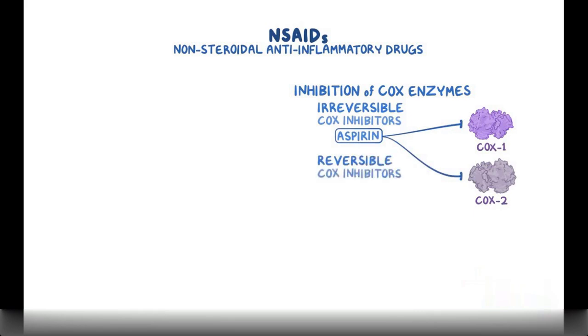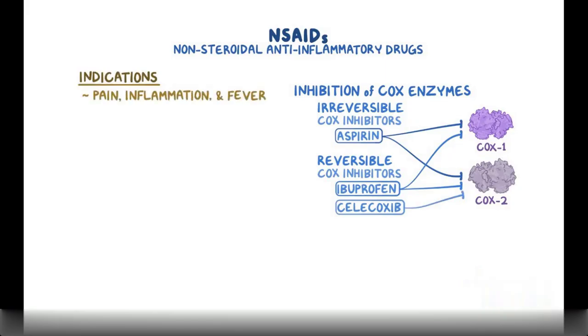Reversible COX inhibitors include medications like ibuprofen, which is also non-selective, and celecoxib, which is selective for COX-2. All NSAIDs can be used to treat pain, inflammation, and fever, but only aspirin is used as an antiplatelet medication.